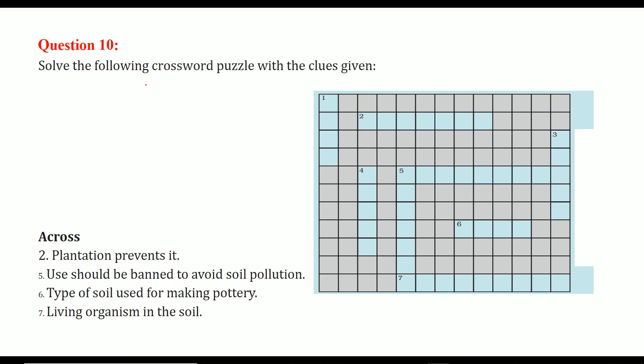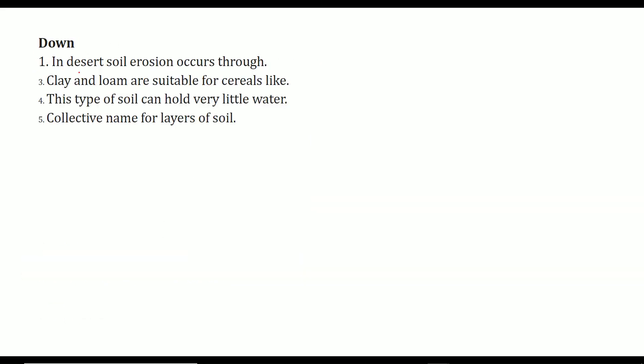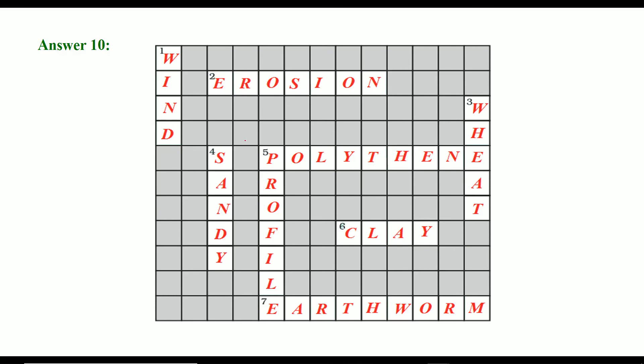Now solving the crossword puzzle we have various clues. So plantation preserves it, that is soil erosion. Use should be banned to avoid soil pollution, you can add plastic if it suffices. Type of soil like clay and living organisms in the soil. In desert soil erosion occurs through wind, clay and loam are suitable for cereals, and this type of soil can hold very little water sandy, collection name of layers of soil. So this is the answer: wind, erosion, sandy, polythene, profile, clay, earthworm and wheat.